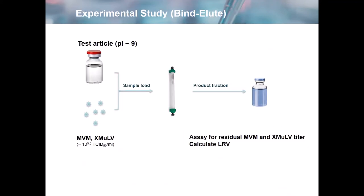The next portion of the study was to evaluate Nuvia HRS and CHT-XT. We used the same test article with a PI of about 9, and MVM and XMULV were spiked into separate runs. The sample was loaded onto the column and eluted in a bind-and-elute mode. The product fraction was collected, and assays for residual MVM and XMULV titer were performed to calculate the LRV.